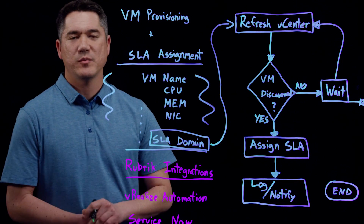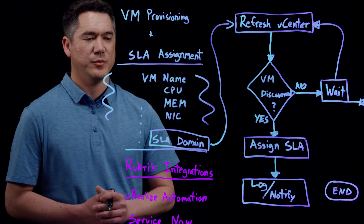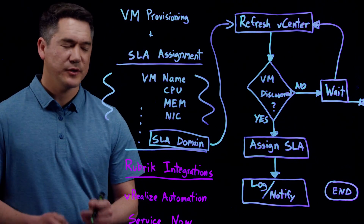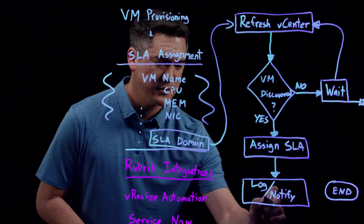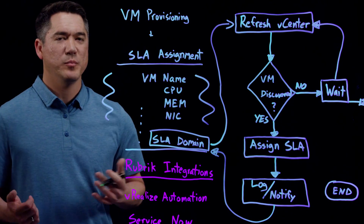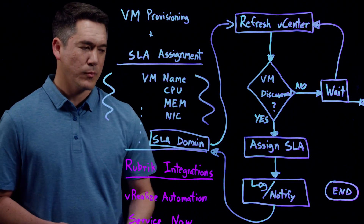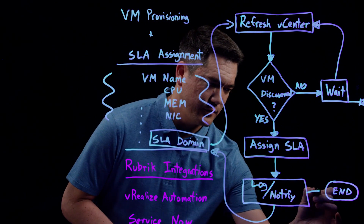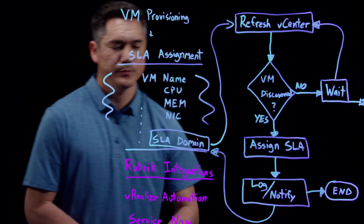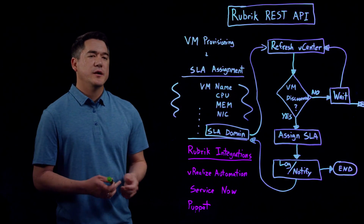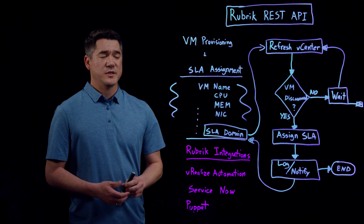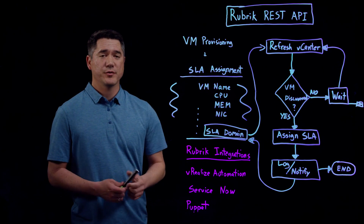At this point, the VM is protected with a Rubrik SLA domain, one that the user has chosen specifically. We can either pass the control back to the existing workflow that we've appended to, or we can just end it right there. This workflow can be brought into any of the major orchestration and automation platforms and engines out there on the market.